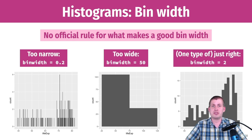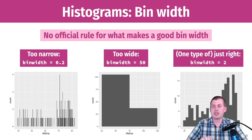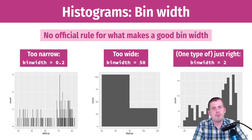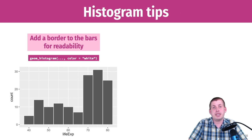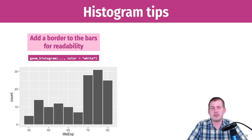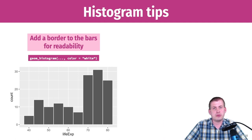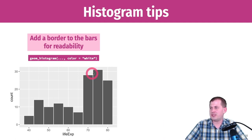You just have to choose whatever bin width looks good for the story you're trying to tell about that distribution. One helpful tip: adding color equals white or some other color adds a border to each bar, making it easier to read.